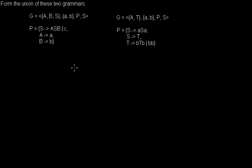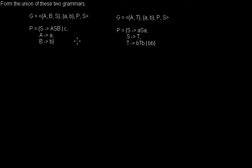Hello, I'd like to show you how to form the union of two grammars. Here I have two context-free grammars, but you can do it with any kind of grammar in those notation. So you can do it with regular grammars, context sensitive grammars, or even type 0 grammars.